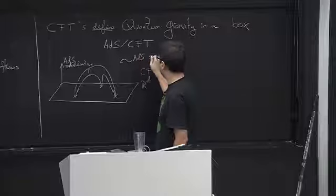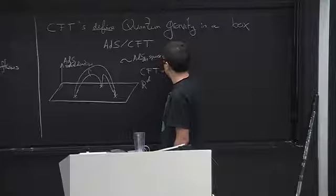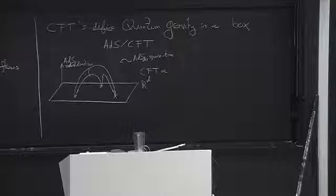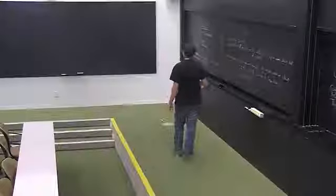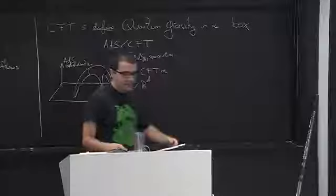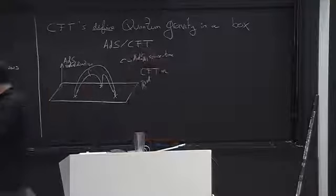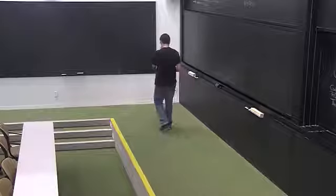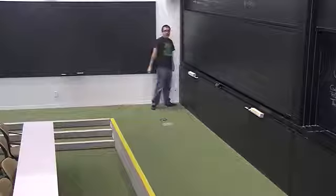This ADS spacetime is ADS_{D+1}, a D+1 dimensional spacetime. This would be a huge motivation for studying conformal field theories — to learn about quantum gravity and about string theory. The best definition of string theory we have right now, in my opinion, is by saying that string theory is the dual of a very precise conformal field theory.